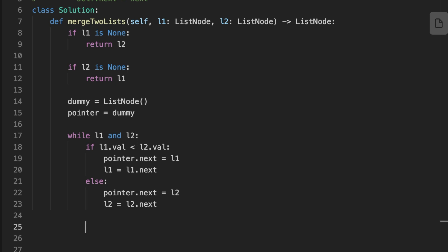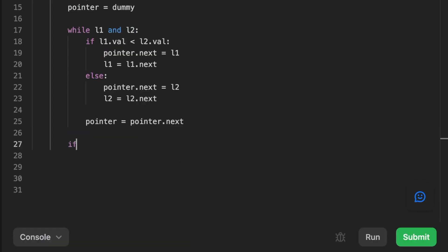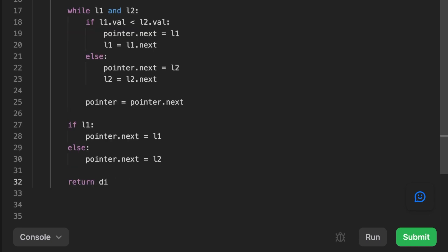Move the pointer to the current value added. Then add the remaining nodes from the non-empty list. Finally, return the merged list by excluding the dummy node.